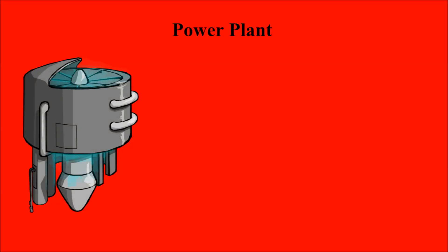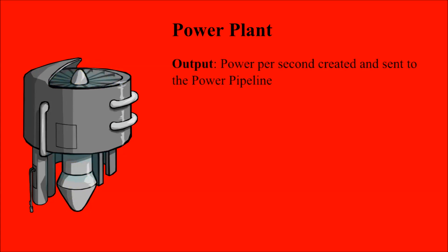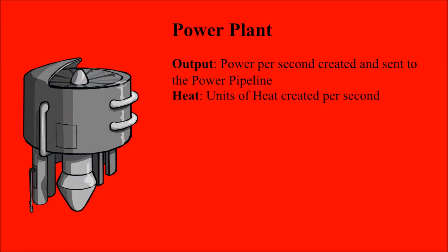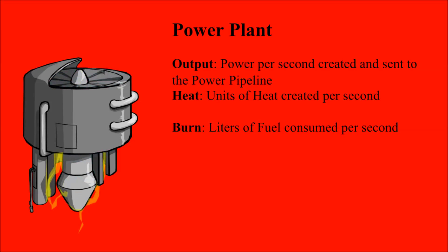The power plant is the beating heart of the ship. Without one, you're not going anywhere, as every component on your ship depends on its output. Output's value is power per second the power plant generates. In this system, I'm using different terms for creating a consumable unit and spending that unit. So output is creating power per second, and power is using power per second. When the pipeline has power, it means it has units per second that can be consumed. Power plants create heat. The value for a power plant's heat is heat created per second. The use of fuel is called burn. A value of burn one means one liter of fuel is consumed per second.